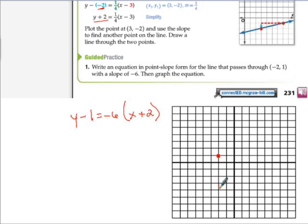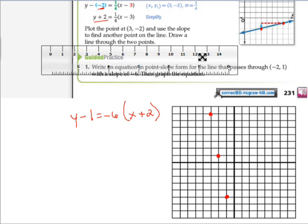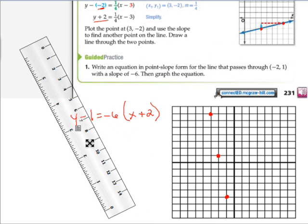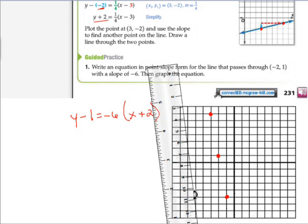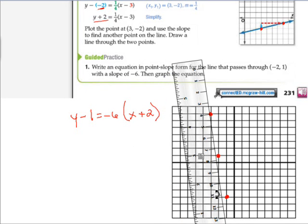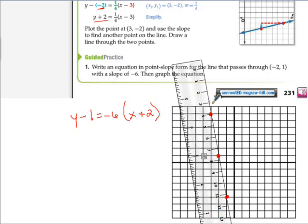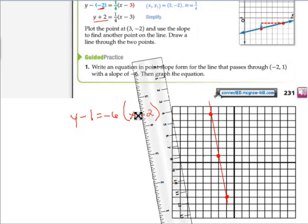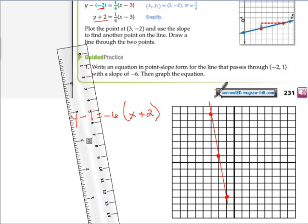To graph it, we simply go to (-2, 1), which is right there. We're going to use the slope to find another point, so that's down 6 over 1, or up 6 and left 1. And then we're going to graph that. I'm going to get my straight edge here, graph my line, make sure that at the end of my line I put my arrows, and that's it.